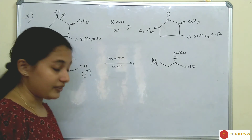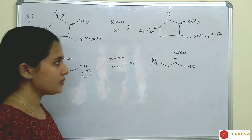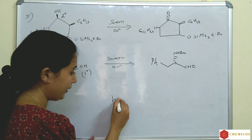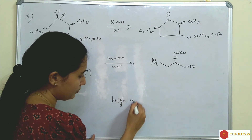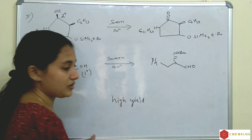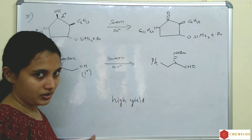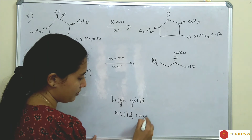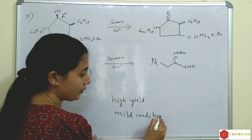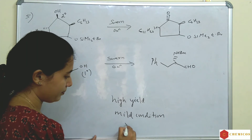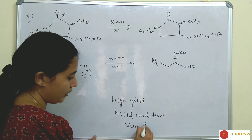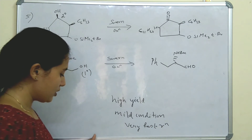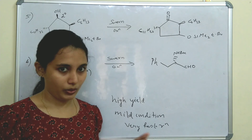The advantages of Swern Oxidation are: it gives a high yield, mild conditions are required, and the reaction is very fast. These are the key advantages of Swern Oxidation.